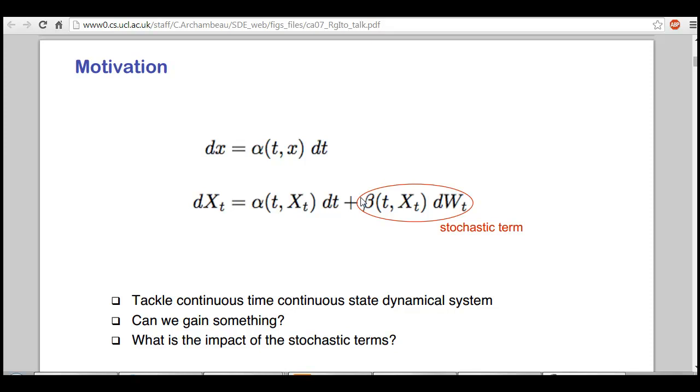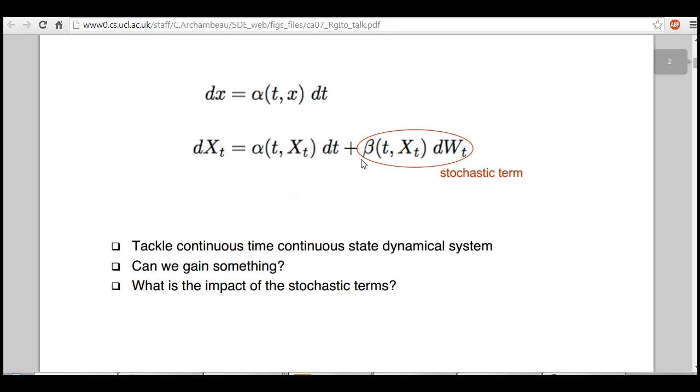I'm using this PDF file from ulc.ac.uk, tackling what we looked at last time—the second term, which is the stochastic term. There are a few things we need to understand: what is this W_T?